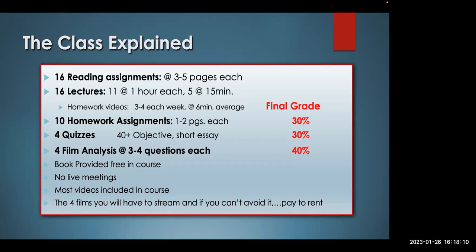You have 10 homework assignments, 1 to 2 pages each, which all constitute about 30% of your grade. You have 4 quizzes, mostly objective, with 1 short essay — that's another 30% of your grade. And then we have the film analysis homework: 3 to 4 questions where you'll analyze a film I've selected. That constitutes 40% of your grade, so it's very important to do those.